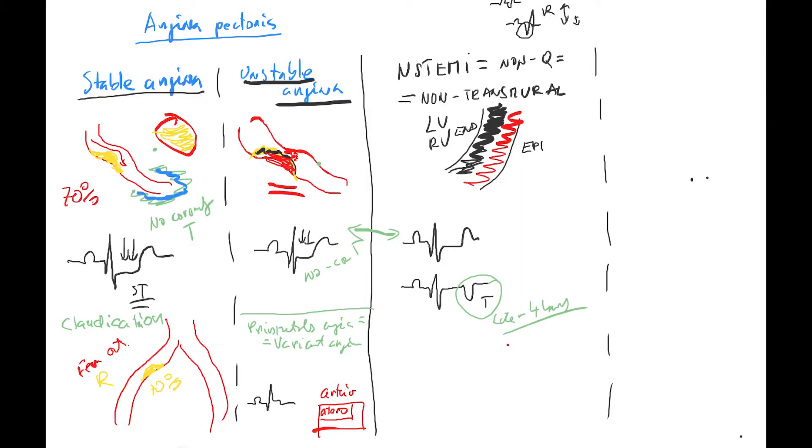That means this is a non-transmural infarction. Doesn't work 100%—if you see non-STEMI, sometimes the wall can be dead all the way through, but in 80-90% it correlates. So if you see non-STEMI or non-Q, you should imagine anatomically that only the wall is dead in one half, or it's not fully dead. That's important. So basically this is not the serious and proper MI.